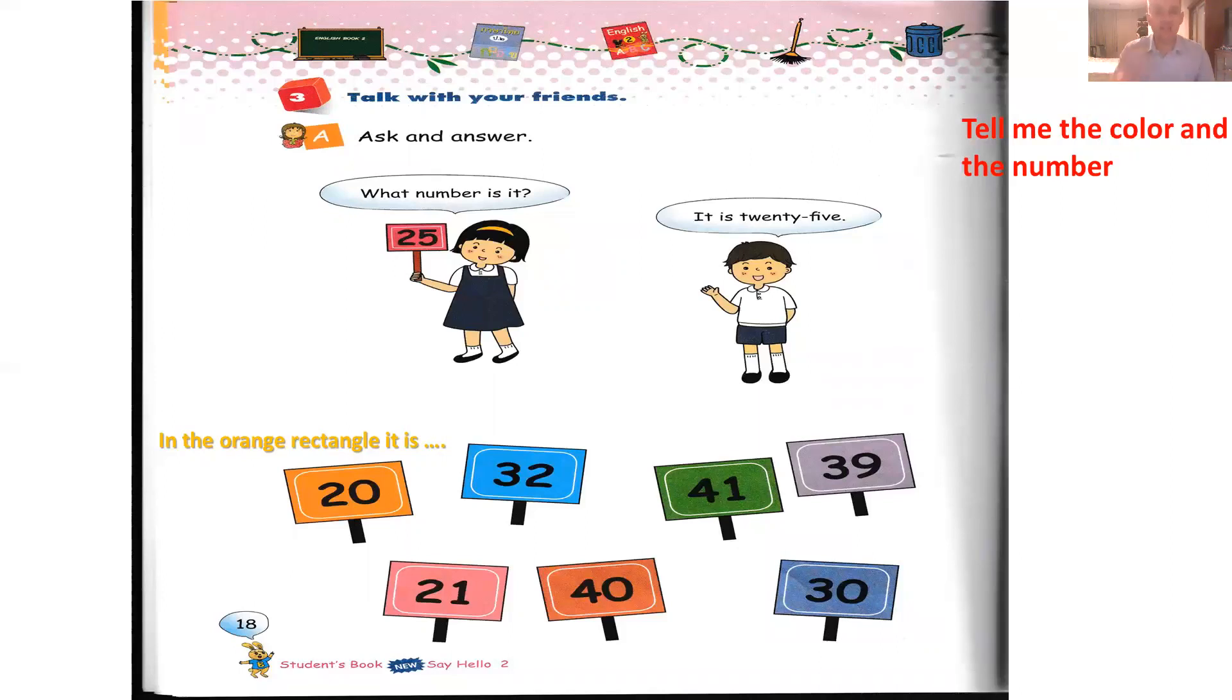Okay, so now teacher Frank asks you, tell me the color and the number in the rectangle. So you click on pause and tell me the color and the number. So I give you an example. In the orange rectangle, it is, what is the number? You will tell me. Okay, so click on pause. Don't write on your book, you don't have to write. You can practice without writing. You can speak. Okay, so try that. So next one. In the sky blue rectangle, it is. Okay, click on pause and follow me just after.